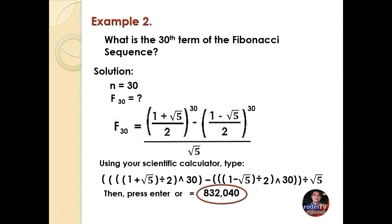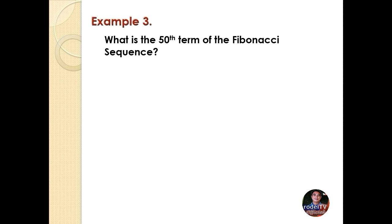Now let us have one more example for you to be able to familiarize the formula using your calculator. Example 3: What is the 50th term of the Fibonacci sequence? Solution: First we determine the value of our n, so our n is 50.